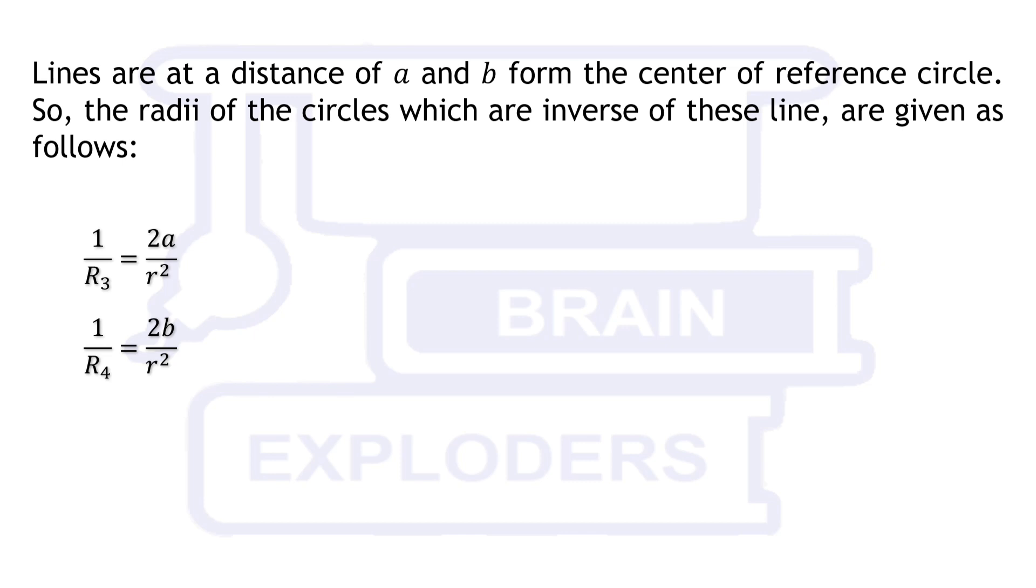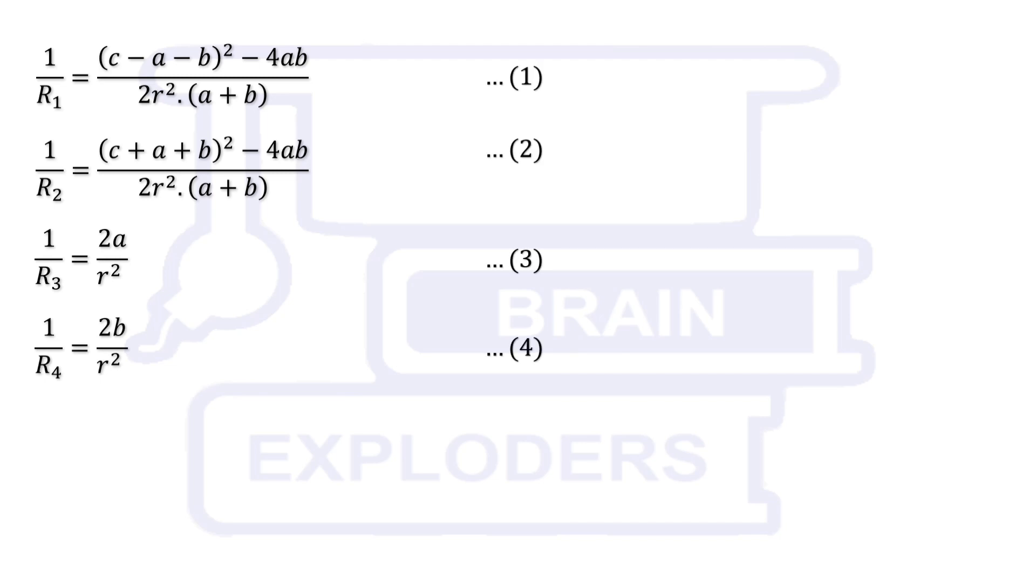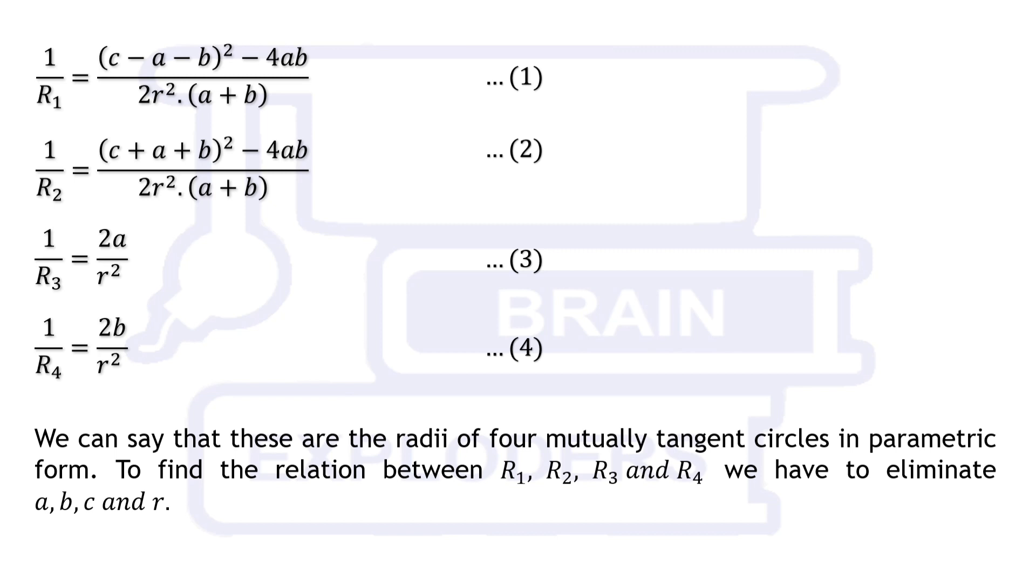Our goal is to find the relation between r1, r2, r3 and r4. We can say that these are the radii of four mutually tangent circles in parametric form. To find the relation between r1, r2, r3 and r4, we have to eliminate a, b, c and r.